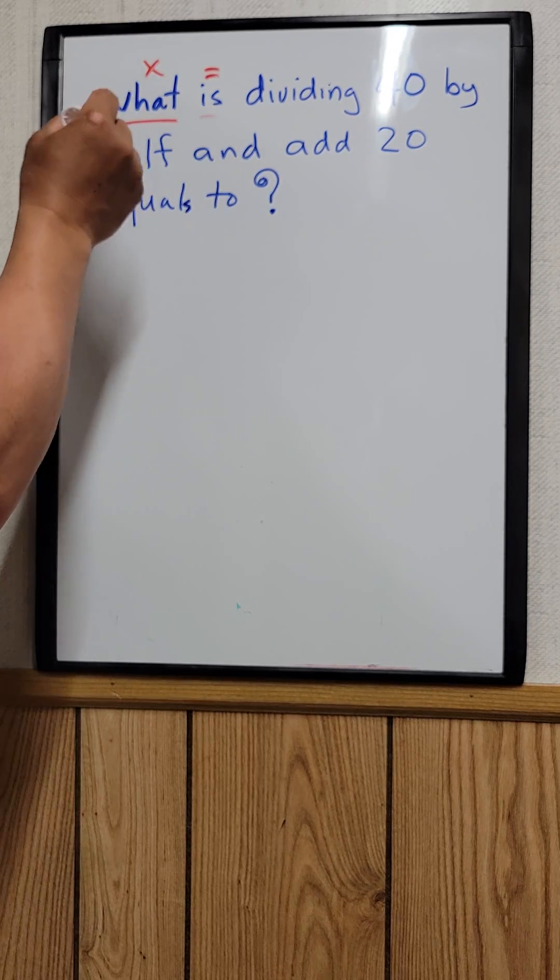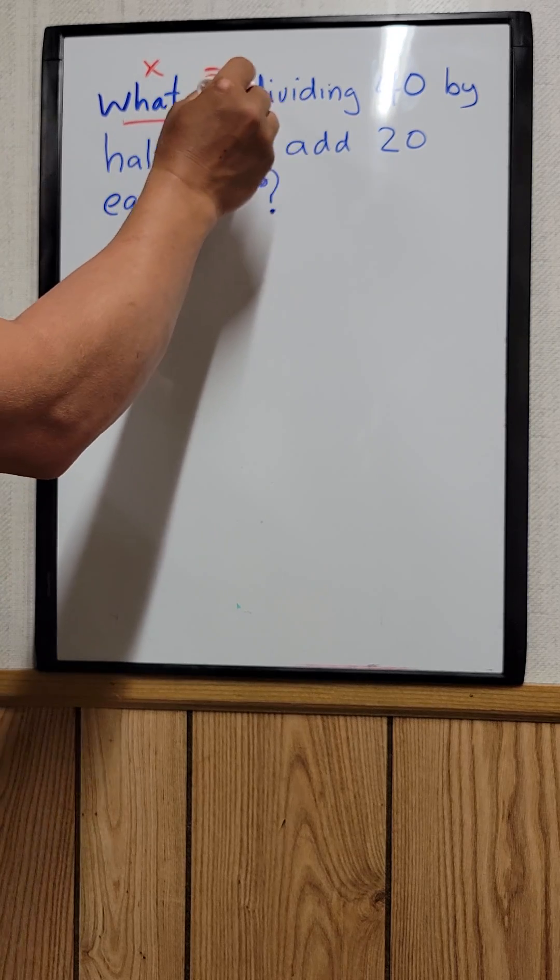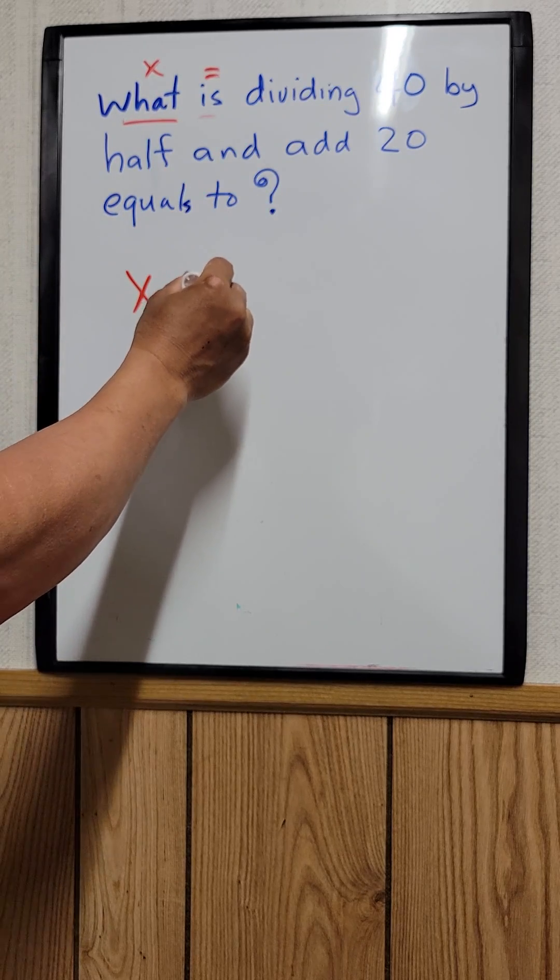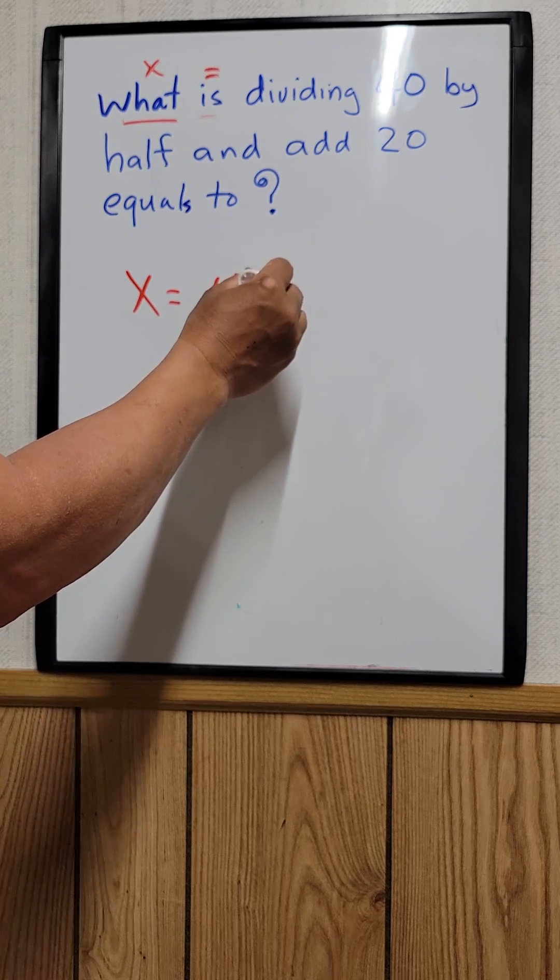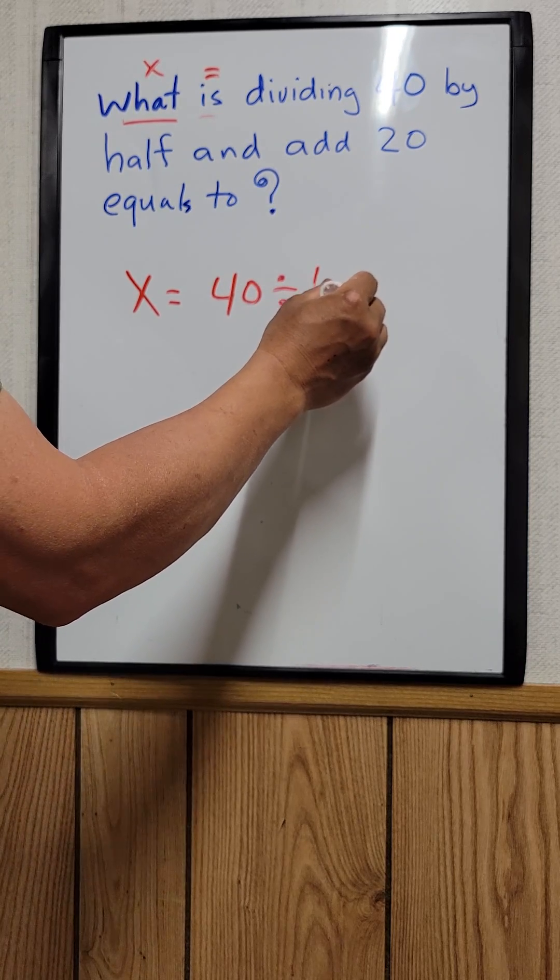So you can set up the equation. You can say that x equals 40 divided by half, so 40 divided by one-half, and then add 20 to it.